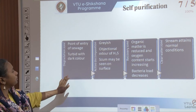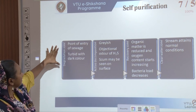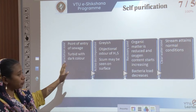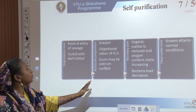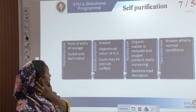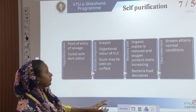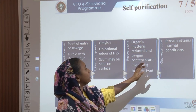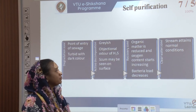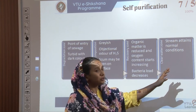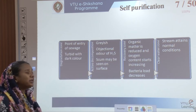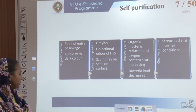Self-purification happens in four stages. First is the degradation zone at the point of entry of sewage, where the water is turbid with a darker color. Once it starts decomposing the water turns grayish, and there is an objectionable odor of H₂S; scum might be seen on the surface. Third is a recovery zone where organic matter is reduced and oxygen content starts increasing, and bacteria load also increases. Fourth is the clear water zone, where after purification the stream attains its normal conditions and near-normal water quality is restored after aeration.